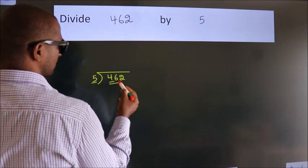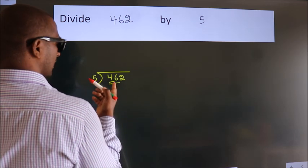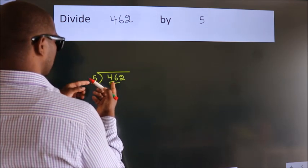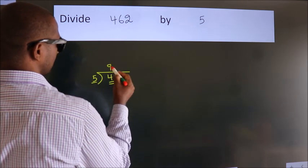So we should take two numbers: 46. A number close to 46 in the 5 table is 5 nines, 45.